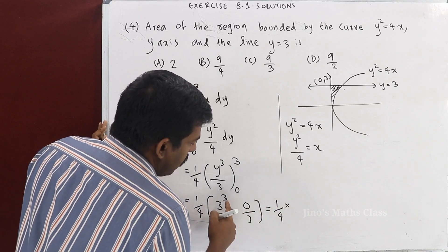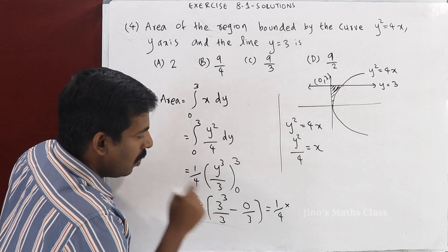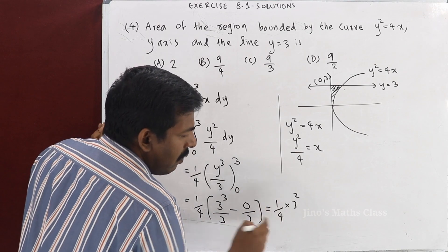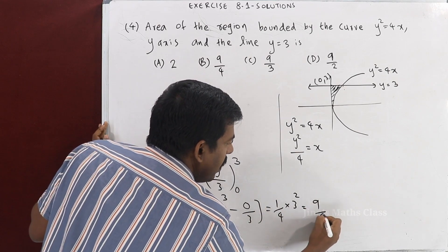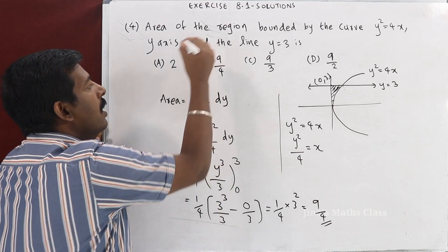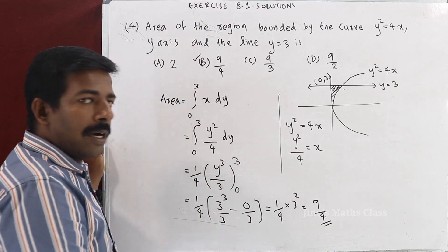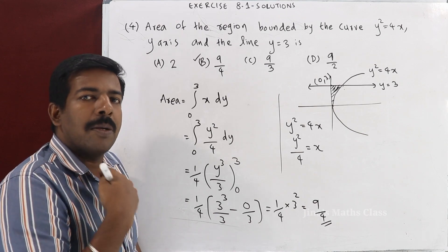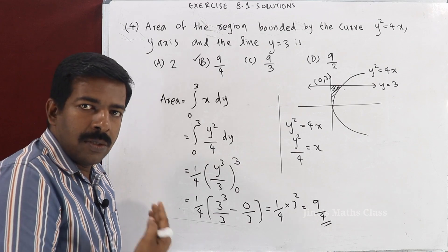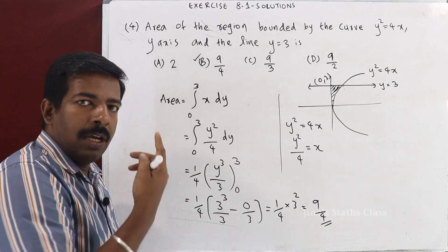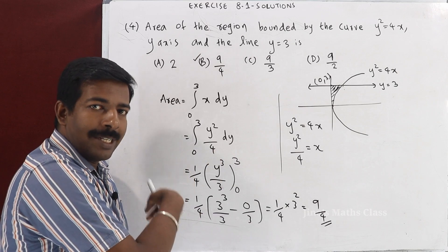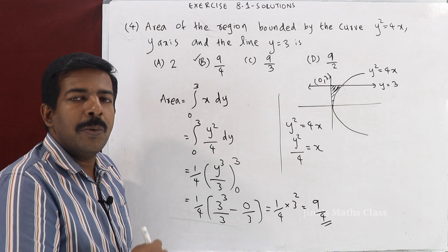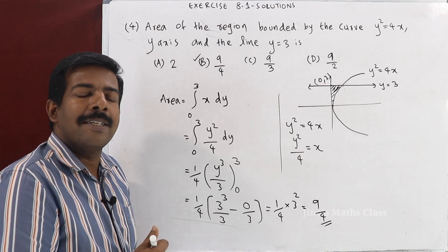Evaluating, we get (1/4) × [y³/3] from 0 to 3, which gives (1/4) × (3³/3) = (1/4) × 9 = 9/4 square units. So the answer is option B, 9/4. We have now discussed all 4 questions from this textbook exercise. Thank you.